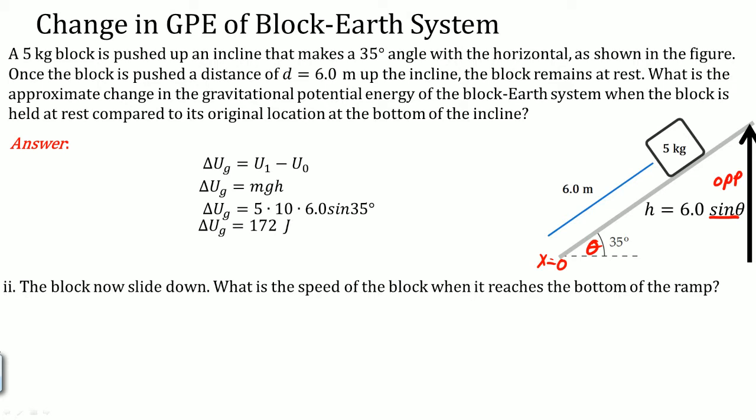As the block slides now, what is the speed of the block when it reaches the bottom of the ramp? Well we know that if it's on top here, Ug is equal to 172. As it comes down here, the kinetic energy is going to equal 172 because at the bottom it's all kinetic, no potential. So here we set it up. This was the energy of the system, and at the bottom it's all kinetic energy. So we just set 172 joules equal to one half mv squared. Solving for it, we get v equals 8.3.